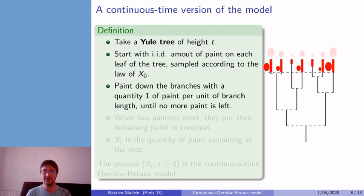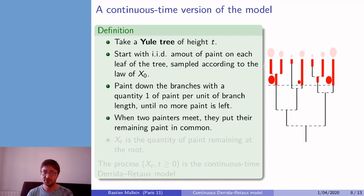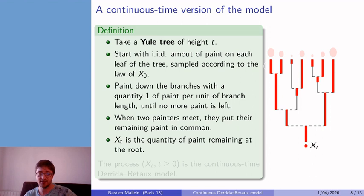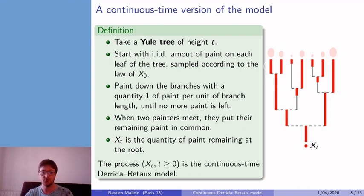So we paint down the branches of the tree, using a quantity of paint of 1 per unit of branch length, until no paint remains in the box. And at every time two painters merge, they put the remaining amount of paint in common, and the quantity of interest here is the variable Xₜ, which is the quantity of paint that remains at the root of the tree. And this process Xₜ is what we call the continuous-time Derrida-Retaux model.